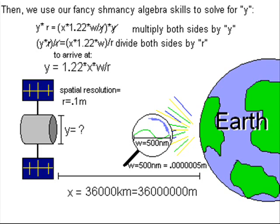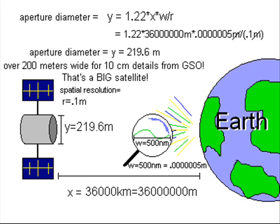With that, we can just find out what kind of aperture we need. Like before, we just plug in our values. We plug in the distance to Earth, the wavelength of visible light, and divide by our resolution that we want. And we end up with an aperture of about 220 meters. That's pretty big.